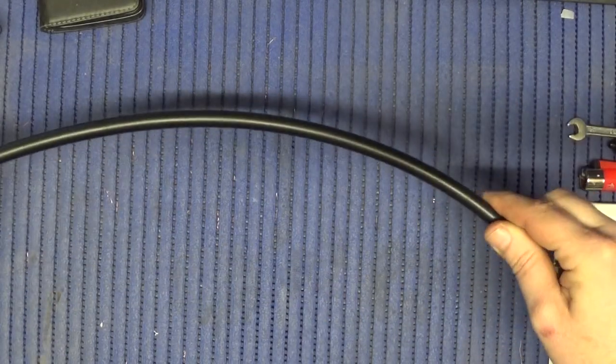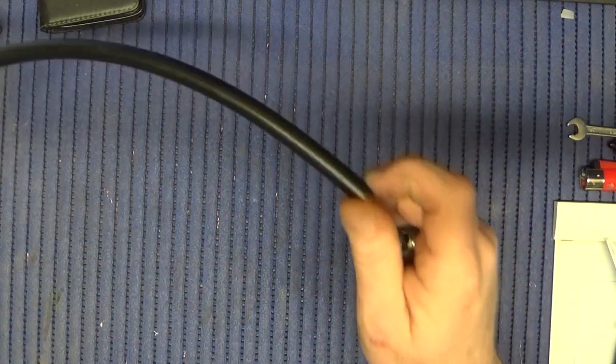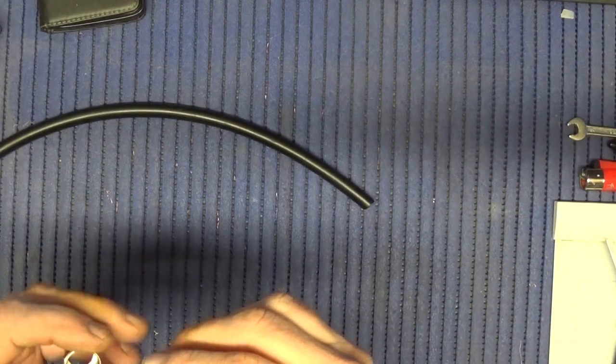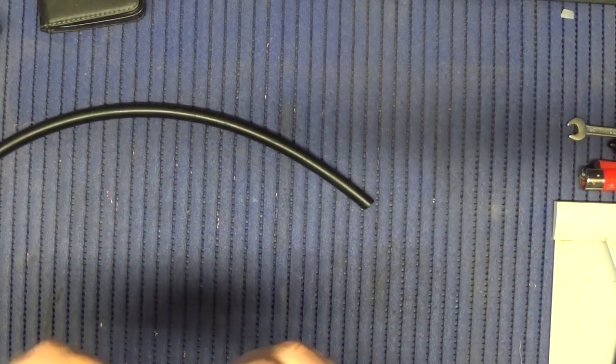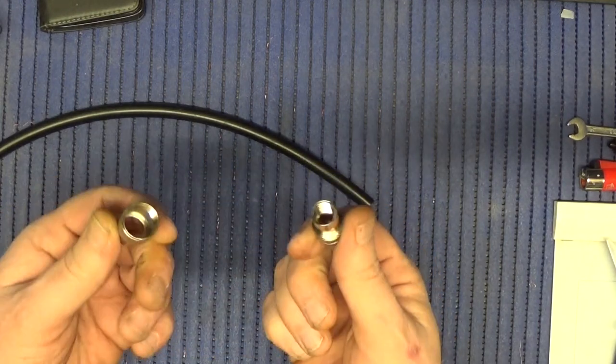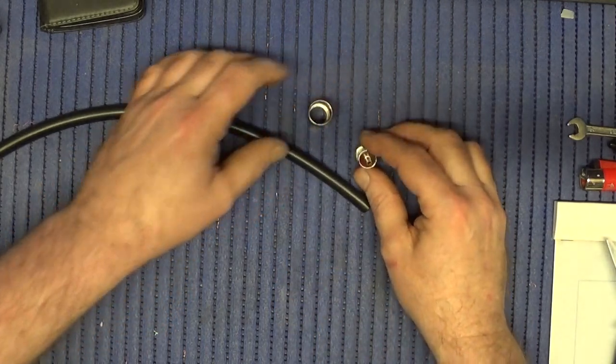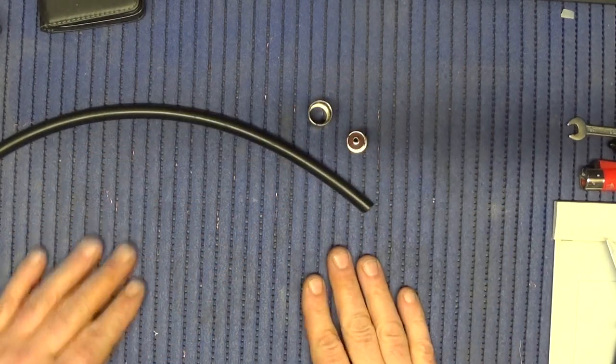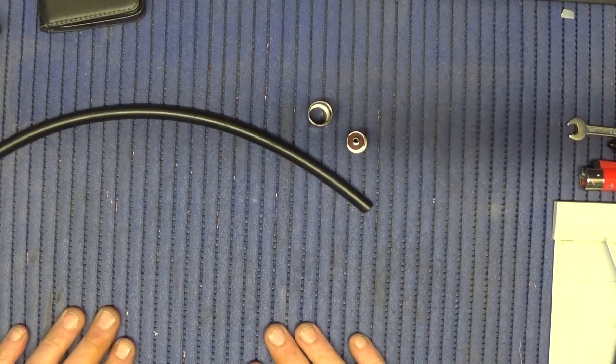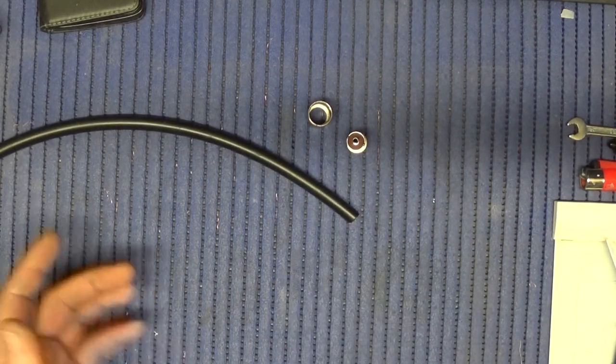This coax is RG213 and I watched a video the other day where this guy was making some antennas and he really struggled to fit the PL259s onto his coax. So I thought I'd make a quick video that might help people out in the future, just showing them how I fit them.